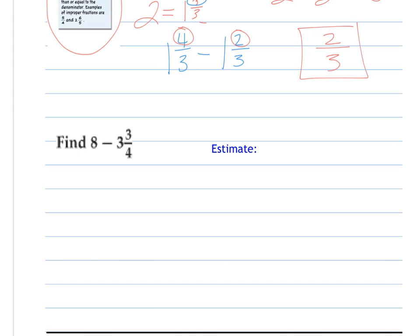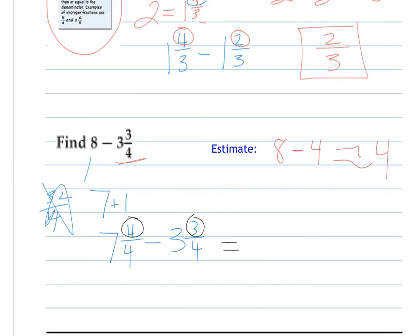Same thing here, this 8 minus 3 and 3 fourths. Well, 8, I need to have a denominator of 4. What I can do is say 8 is the same as 7 plus 1, right? So I can write that 8 can be written as 7, and 1 whole out of the 4 out of 4. So then I'm just writing 7 and 4 fourths, which is 8, minus 3 and 3 fourths. Remember to estimate 8, and the number is approximately 4. We round this up, so our answer should be around 4. So I can subtract my numerators, and I get 1, subtract my whole numbers, and I get 4.